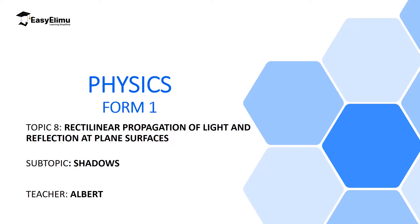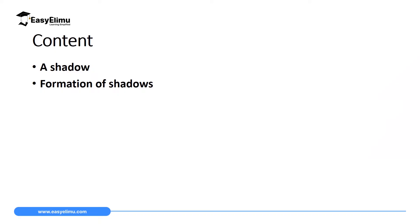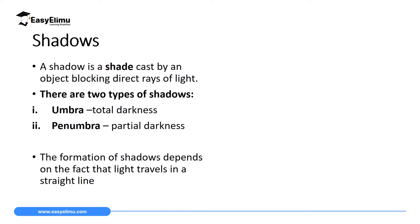Welcome to ECLIMU Learning Simplified. In the previous lesson, we were discussing how to prove that light travels in a straight line — we looked at the cardboard experiment and the straight pipe experiment. Now in this lesson, we are going to discuss shadows as a proof that light travels in a straight line. My name is Albert. By the end of this lesson, I expect you to be able to explain what a shadow is, list the two types of shadows, and explain how the two types of shadows are formed. We are going to begin with the definition of a shadow and then look at the types of shadows.